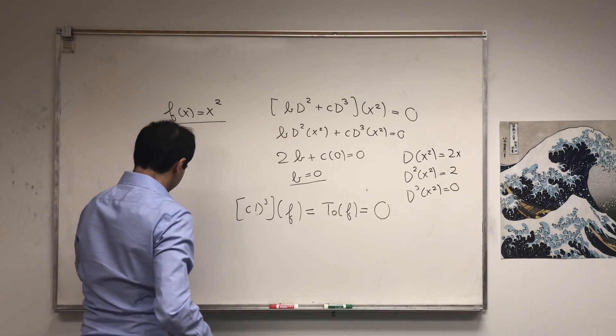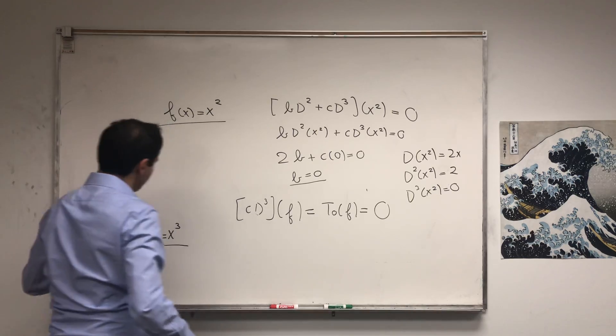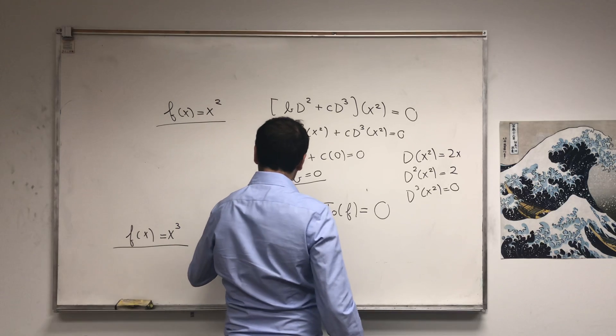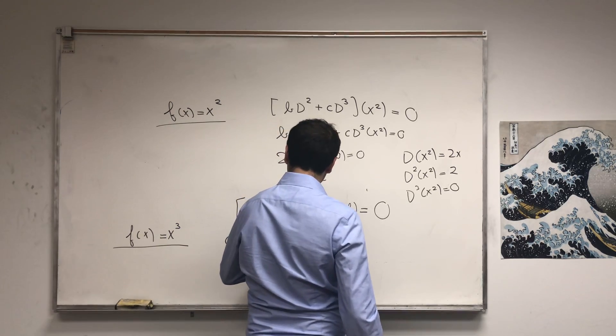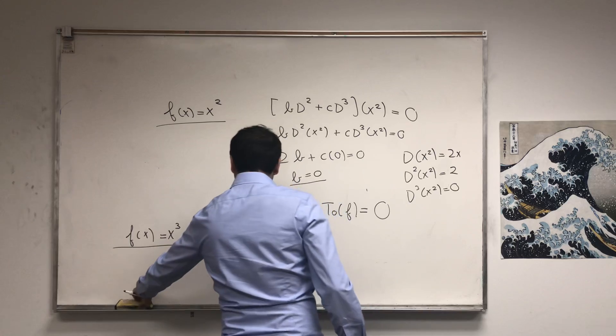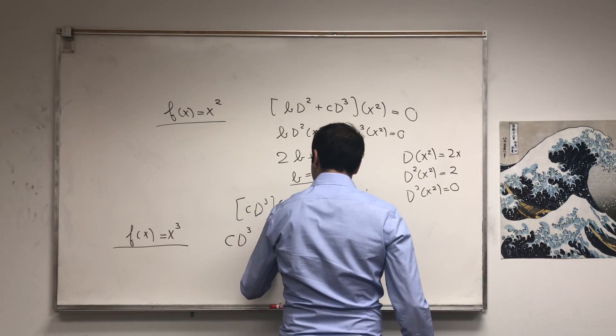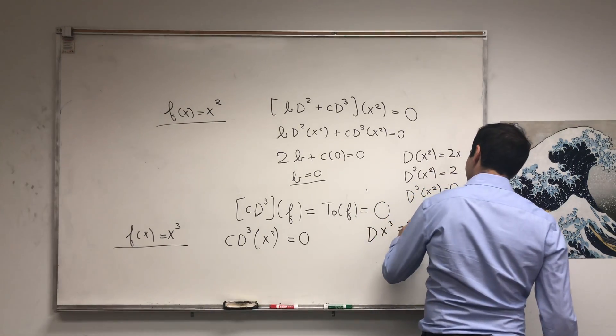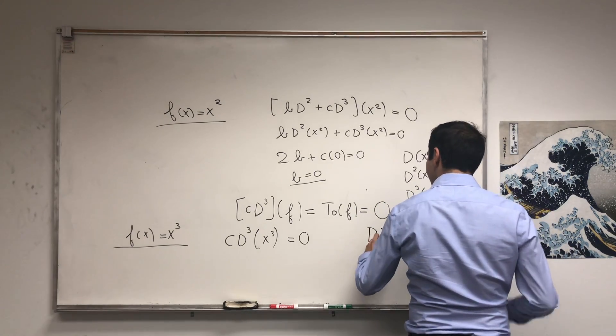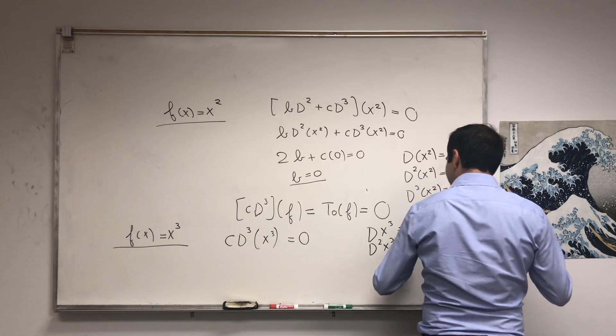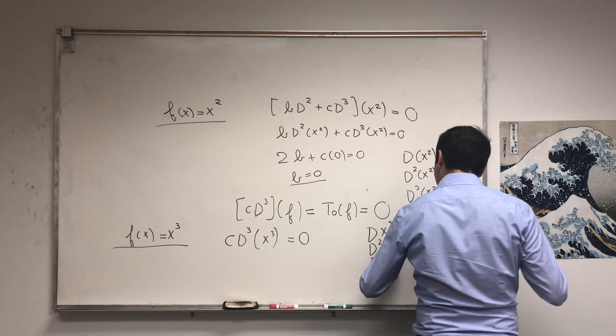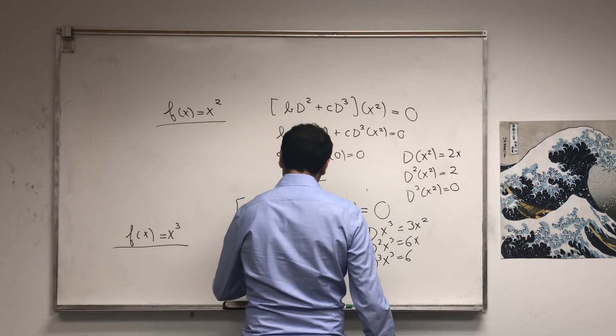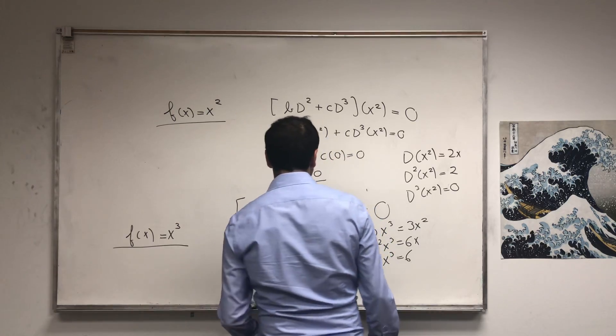And then what we get is cD³ of x³, we know that's zero. But let's see: D(x³), that's 3x². D²(x³), you do that again, 6x. D³(x³), that's 6. And so you get 6c equals zero, and that implies c equals zero.